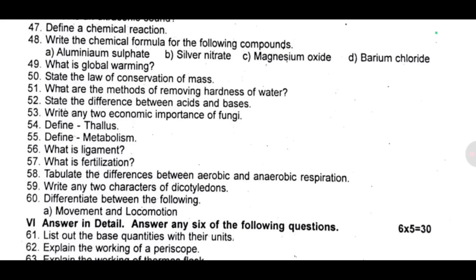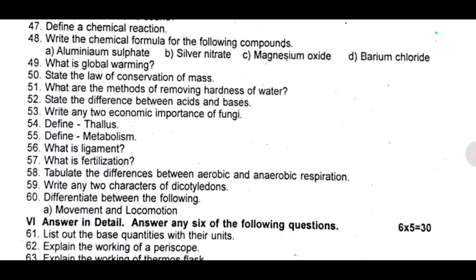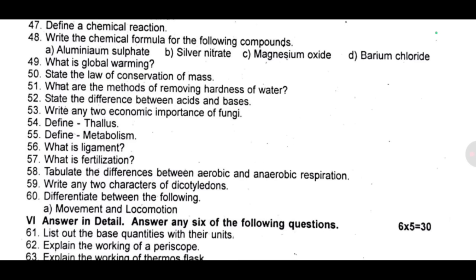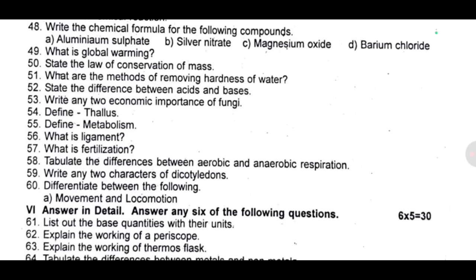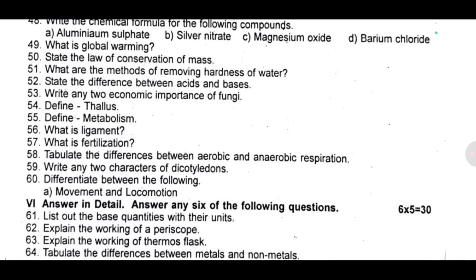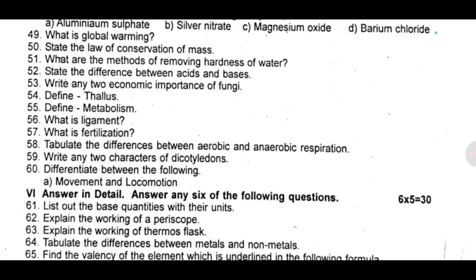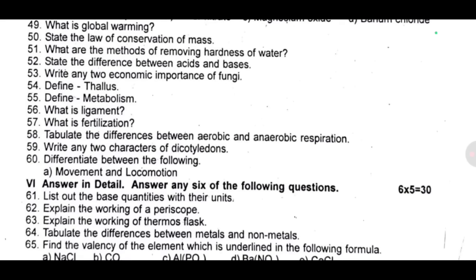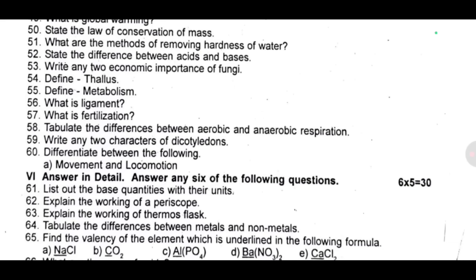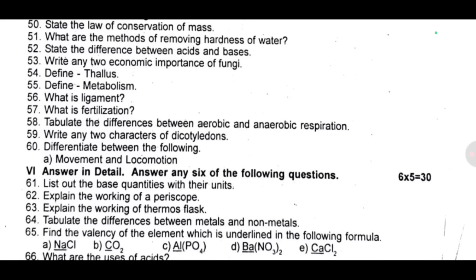Detail questions: sixty-one, list out the base quantities with their SI units. Sixty-two, explain the working of a periscope. Sixty-three, explain the working of a thermos flask. Sixty-four, tabulate the differences between metals and non-metals. Sixty-five, find the valency of the underlined element in the following formulas: NaCl (Na), CO2 (C), AlPO4 (Al), Al, Ba(NO3)2 (Ba), CaCl2 (Ca).